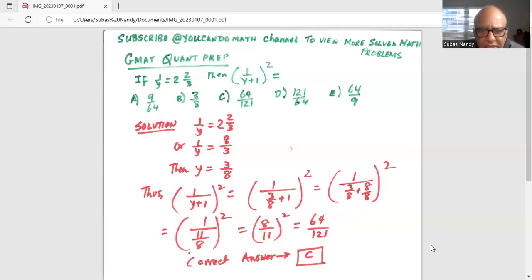So the correct option is C, 64 over 121. So I'll stop here today.